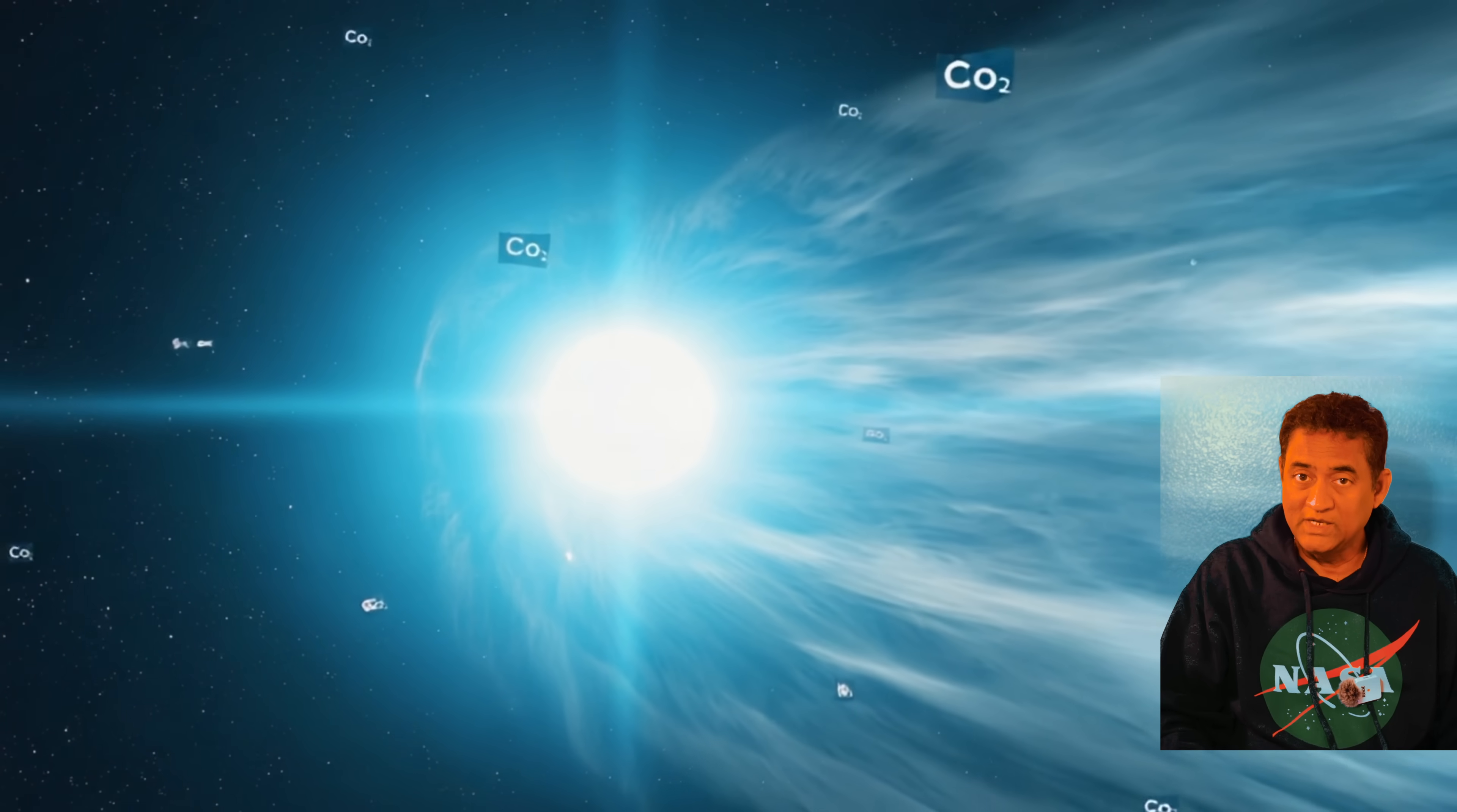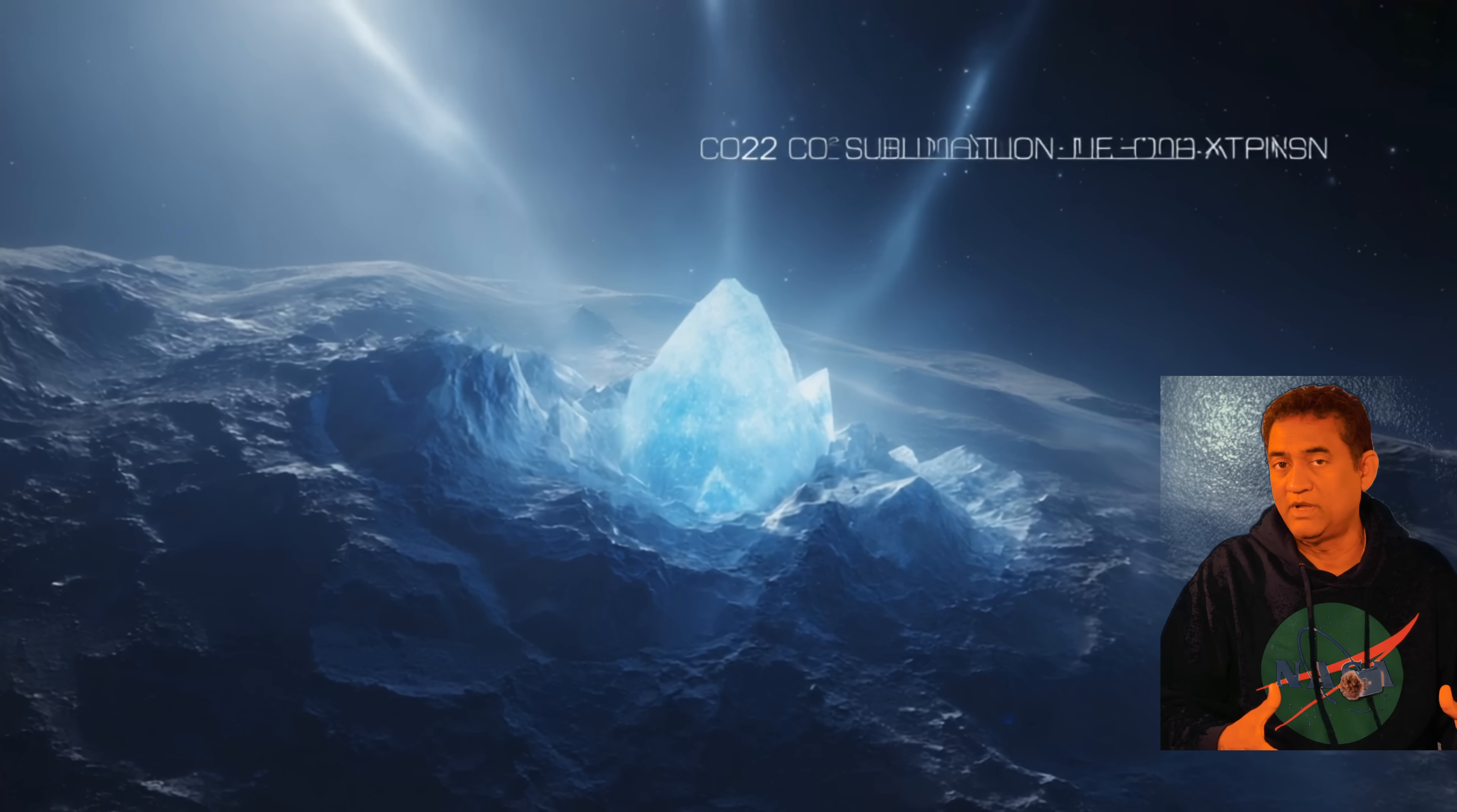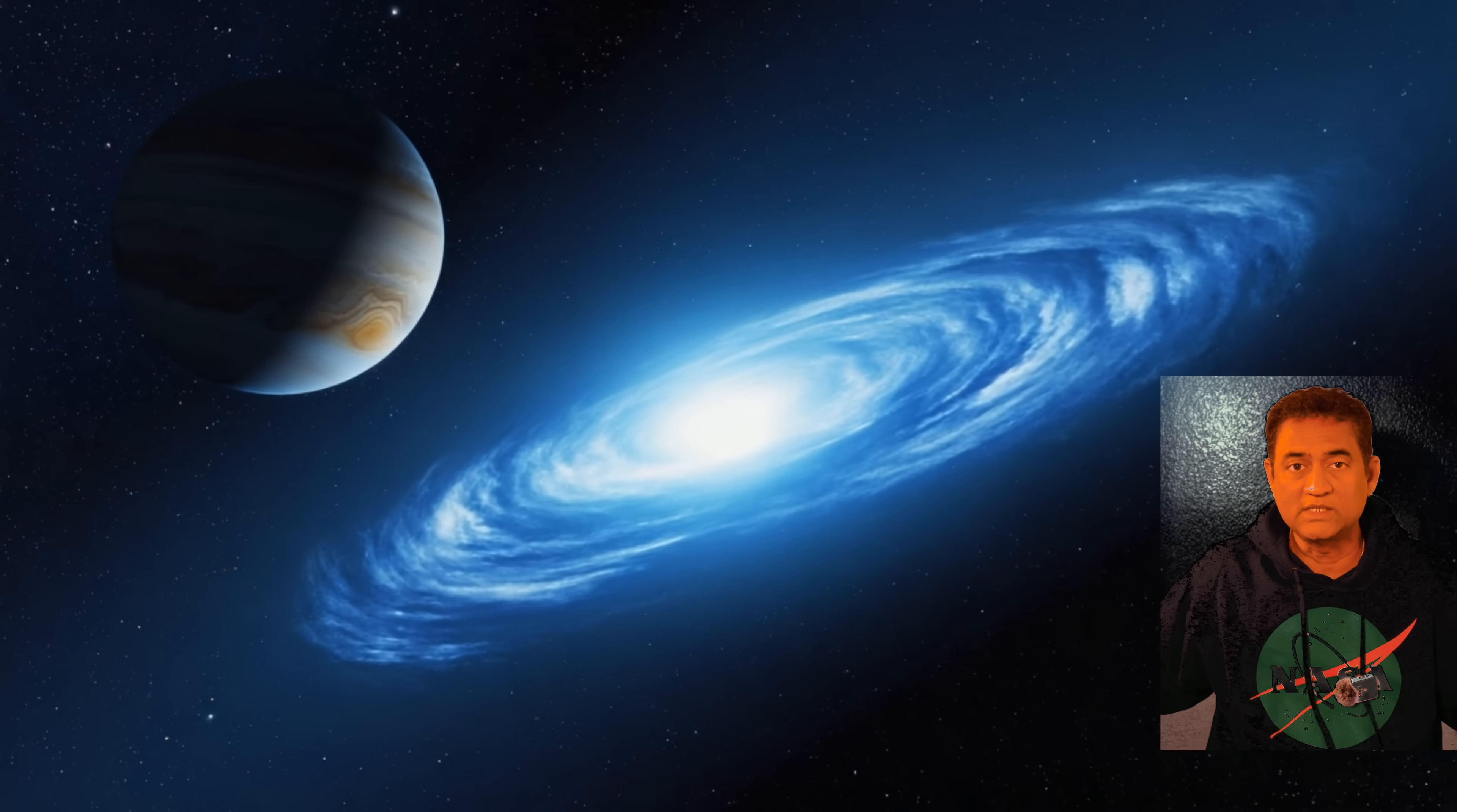The James Webb telescope showed that Atlas has extremely high carbon dioxide ratio, about eight parts of CO2 for every part of H2O. So when carbon dioxide sublimates, meaning it turns solid ice into gas at much lower temperatures than water, Atlas is still far out beyond Jupiter and it is already releasing gas, inflating the coma and making the size monstrous.